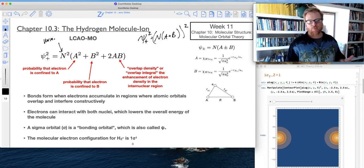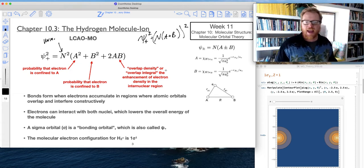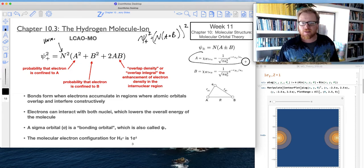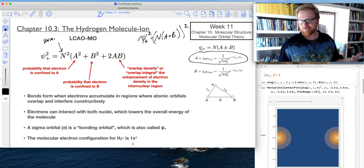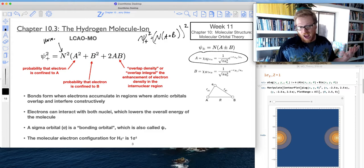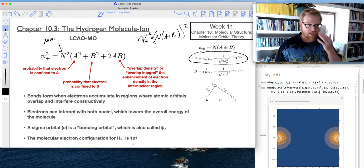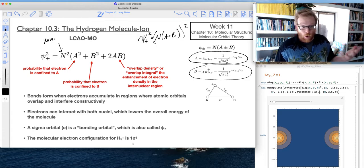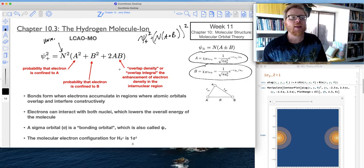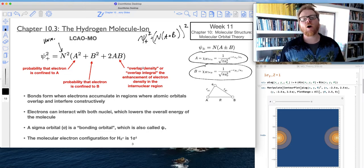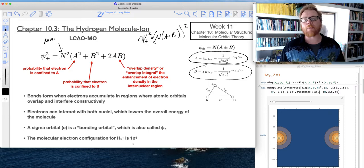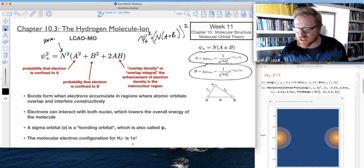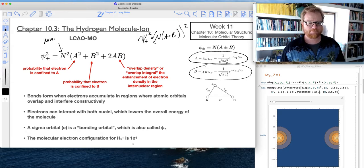So A squared is the probability that the electron is confined to A, and so that's just going to take on the pure 1s orbital. When I square this A function, that's just the 1s orbital as we know it. B squared is the probability that the electron is confined to B, and so once again that's just going to be 1s orbital. And now this 2AB, this is what we call the overlap density or the overlap integral, and this describes the enhancement of electron density in the internuclear region.